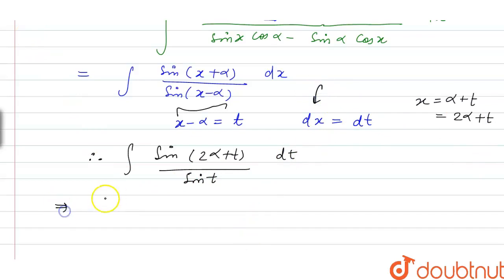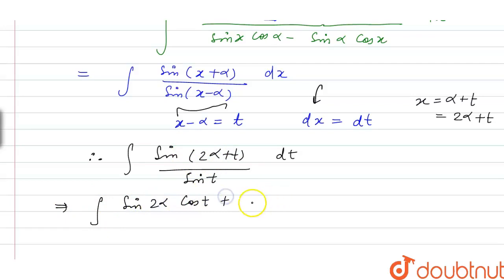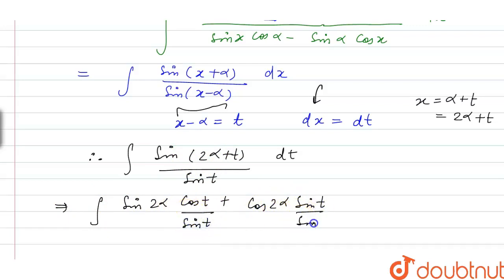To solve further, we expand sin(2α + t) using the sine addition formula: sin(2α + t) equals sin(2α)·cos(t) plus cos(2α)·sin(t). The denominator is sin(t). So we have sin(2α)·cos(t)/sin(t) plus cos(2α)·sin(t)/sin(t), all times dt.